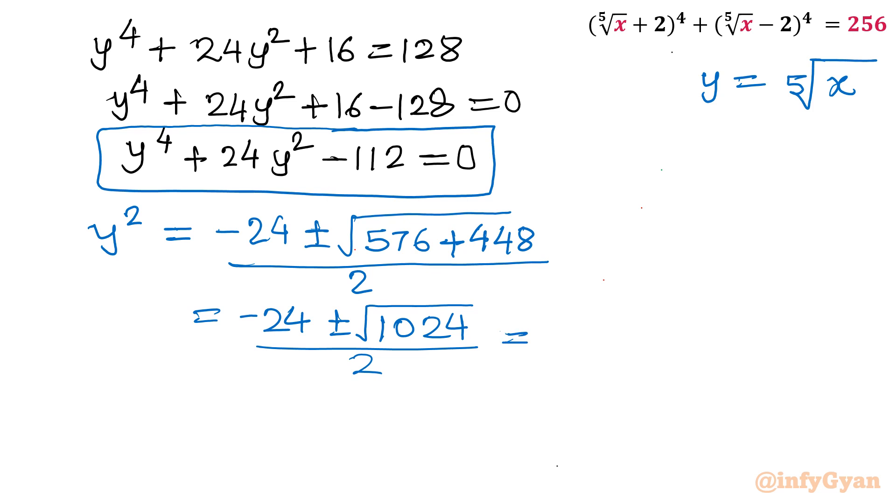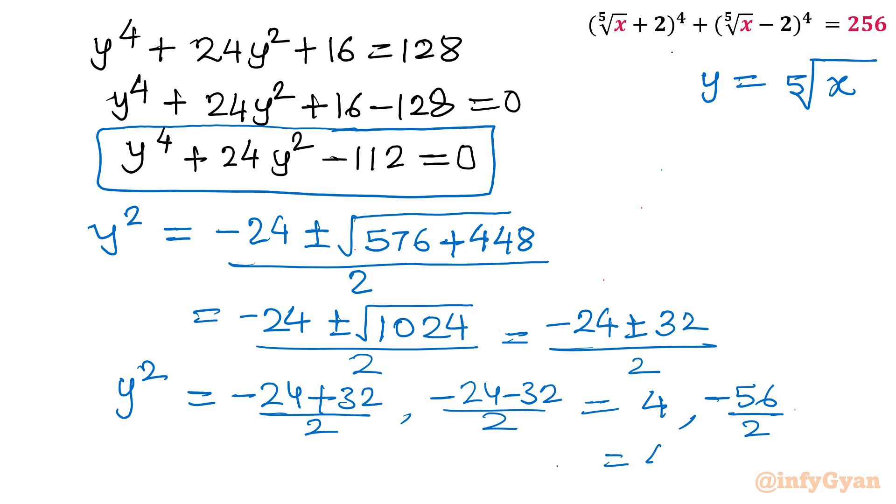So we get minus 24 plus minus 1024 divided by 2. Now we know that square root of 1024 is 32. So I will write minus 24 plus minus 32 divided by 2. Once I will consider plus sign, then minus 24 plus 32 over 2 which is 8 over 2 equals 4. And with minus sign, minus 56 over 2 which will be minus 28.